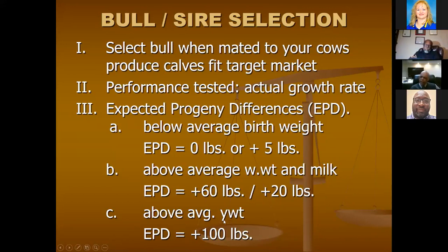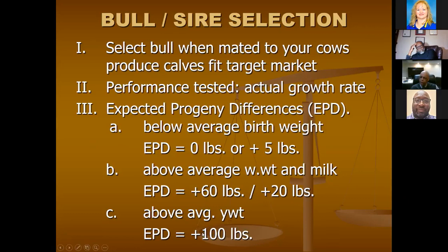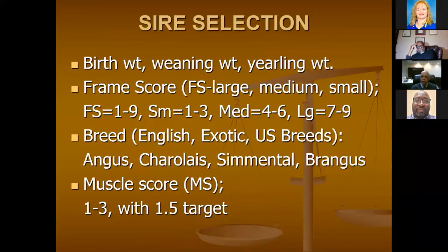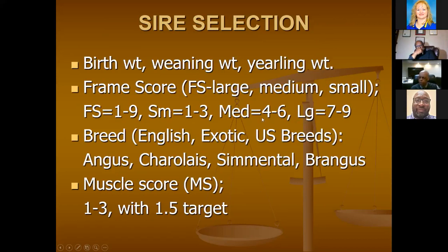When looking at EPDs, birth weight is the only thing we want to see small. Everything else we want as big as we can get compared to that breed. We've been going after Angus bulls that are zero or below on EPD for birth weight, at least plus 60 pounds for weaning weight, and plus 100 pounds for yearling weight at 365 days — meaning this bull's babies, compared to other Angus bulls in the breed, will weigh 100 pounds heavier at 365 days. Frame score: we don't want short bulls scoring one to three, and we don't want them too big. We'll probably have another workshop talking about factors that influence calf prices. Sometimes it's influenced by the breed — English breeds like Angus and Hereford, exotic breeds like Charolais, Simmental, and Limousin, and U.S. breeds like Brahmans.